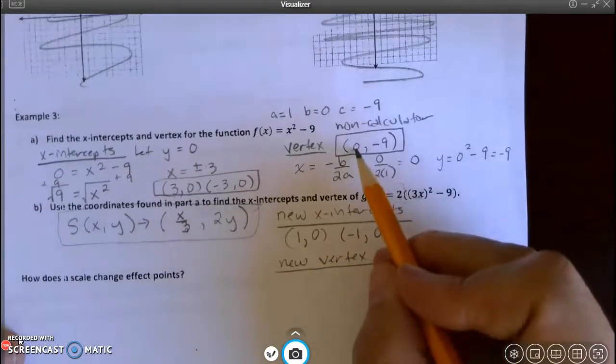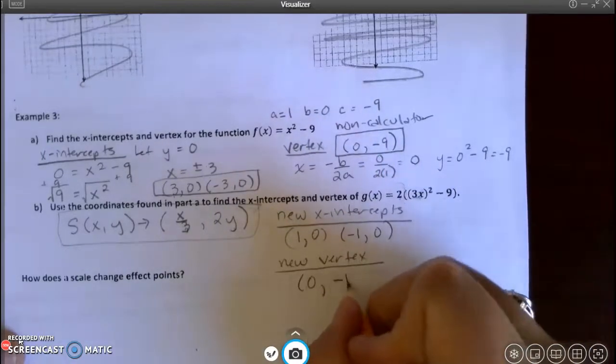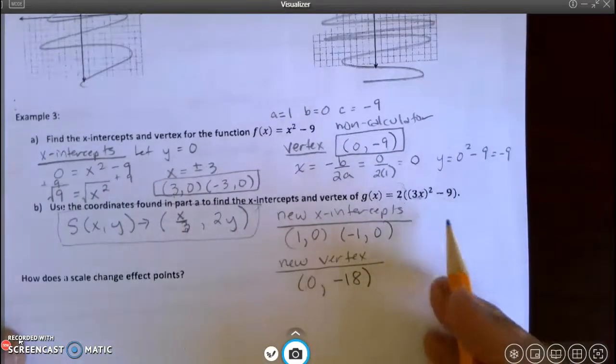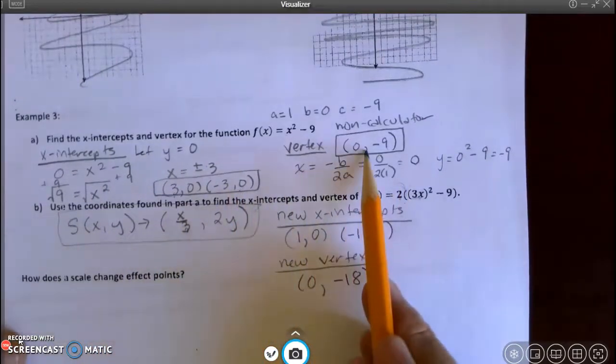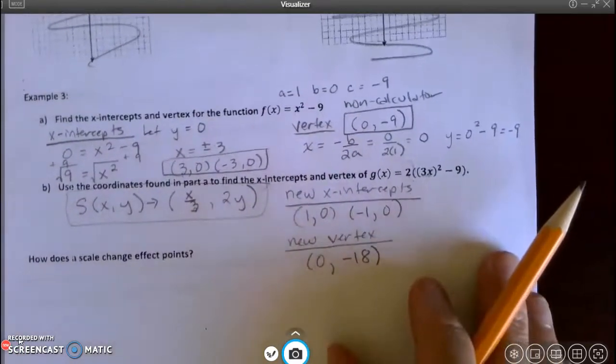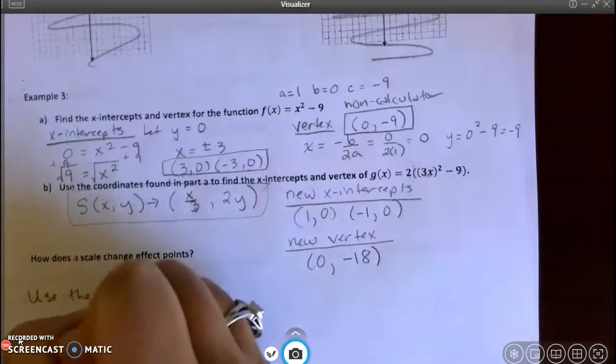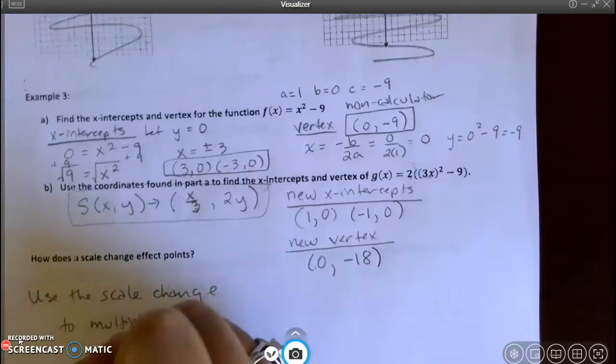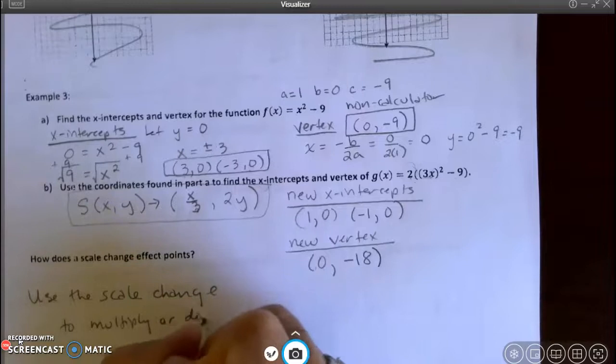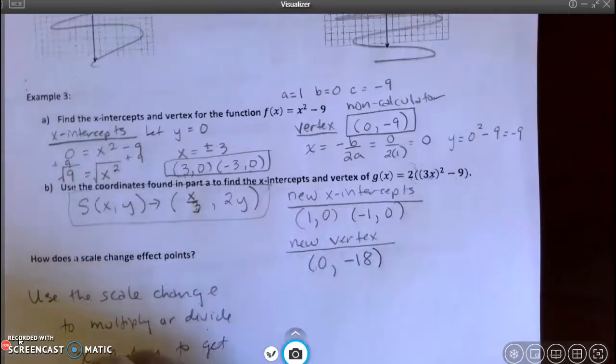Let's see, 0, when I divide that by 3, I still get 0. And negative 9 times 2 is negative 18. So all I did was apply my scale change to the x-intercepts and vertex that I found above. So how does the scale change affect the points? You use the scale change to multiply or divide x and y to get the new coordinates.